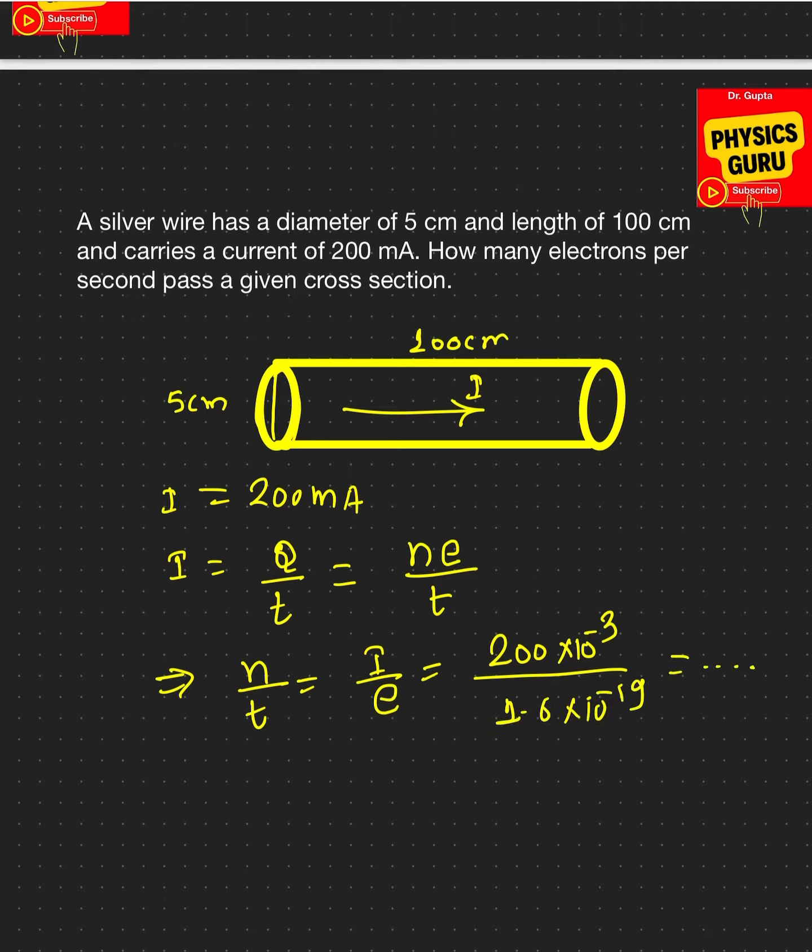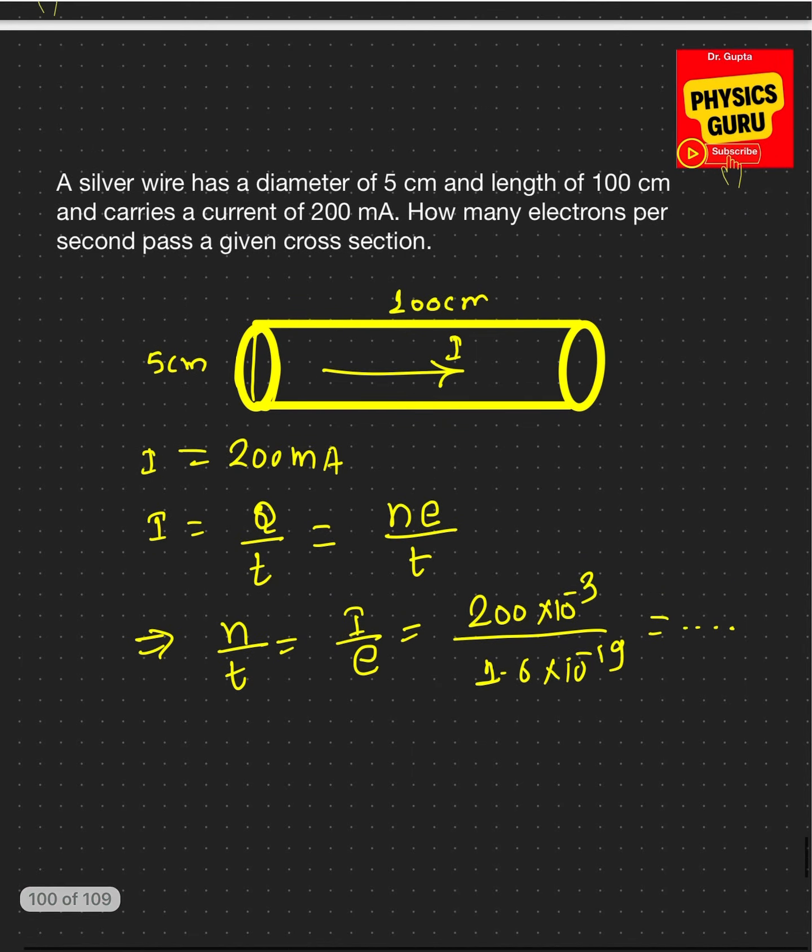So that's the number of electrons that is passing through a given cross section area. Here we're assuming that the charge is only due to the electrons. All right, so this is it from this video. If you have any questions, write down in the comment section below. Thank you very much.